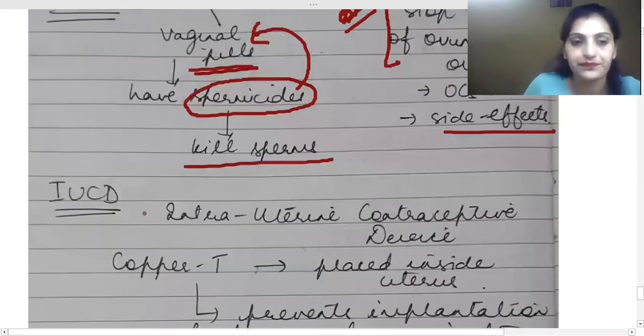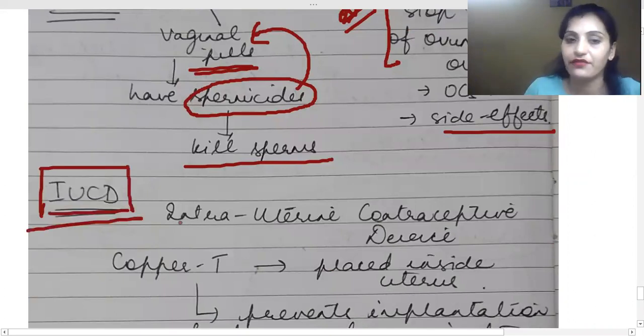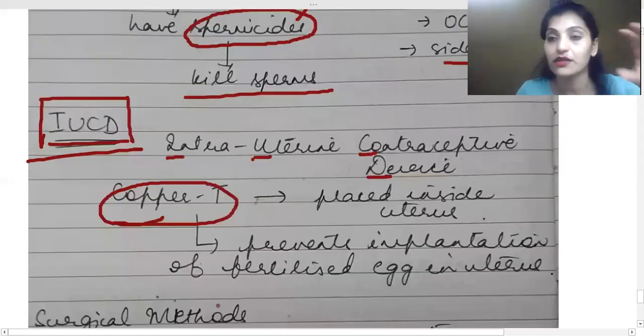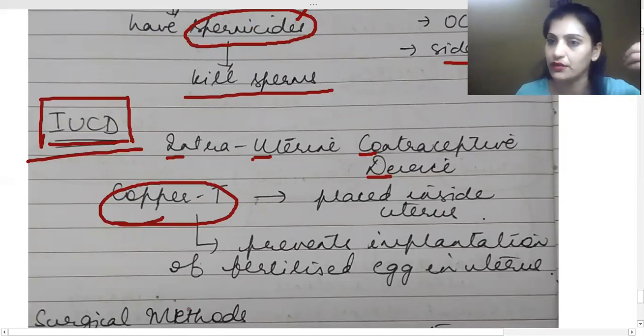One thing is your IUCD. And this is very important. The expansion of it is intrauterine contraceptive device. It is basically copper T and it is placed inside the uterus.